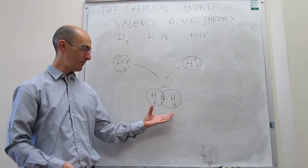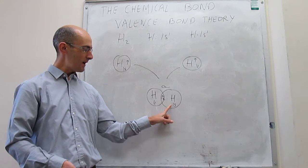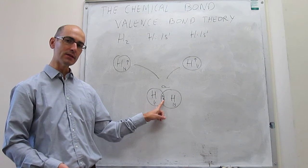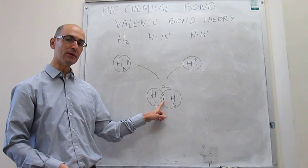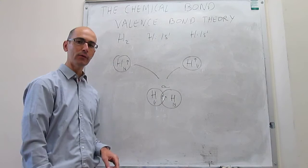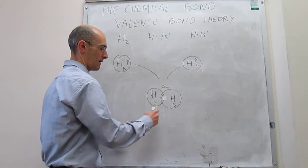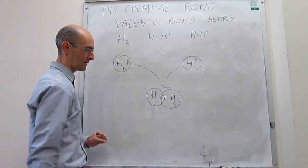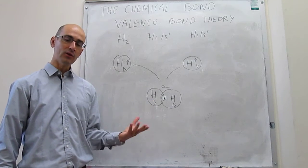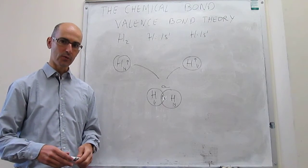This is the valence bond theory diagram for H₂: we have the overlap of the atomic wave functions, which are well-labeled. Notice that the two electrons are now in the same region of space, so they must have anti-parallel spins — it would be incorrect to draw both spins up, as that would violate the Pauli exclusion principle. We label this overlap as sigma; as we'll see in other molecules, there are also pi, delta, and so forth overlaps.